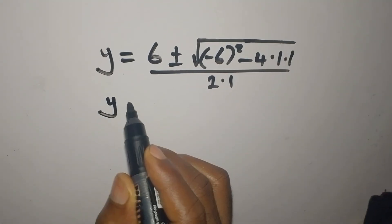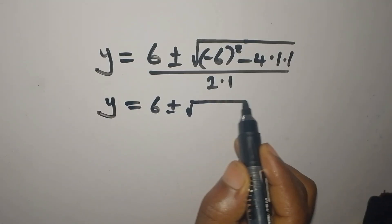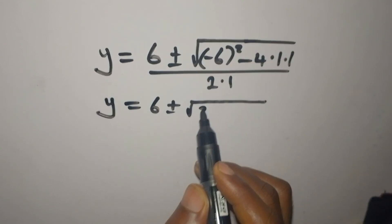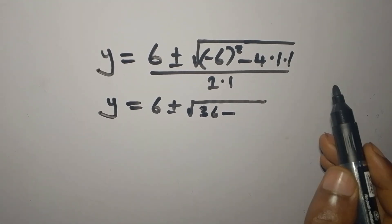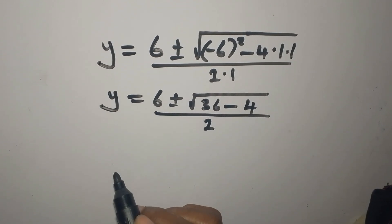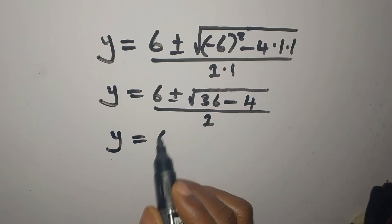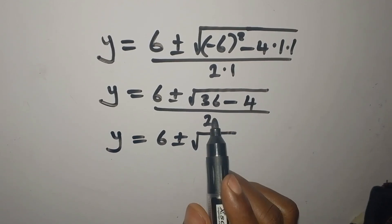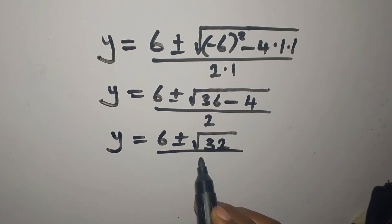So Y equals 6 plus or minus the square root of 36 minus 4, which is 32, divided by 2.